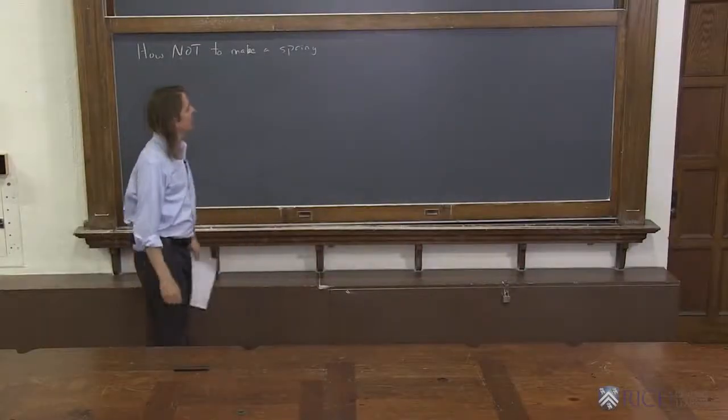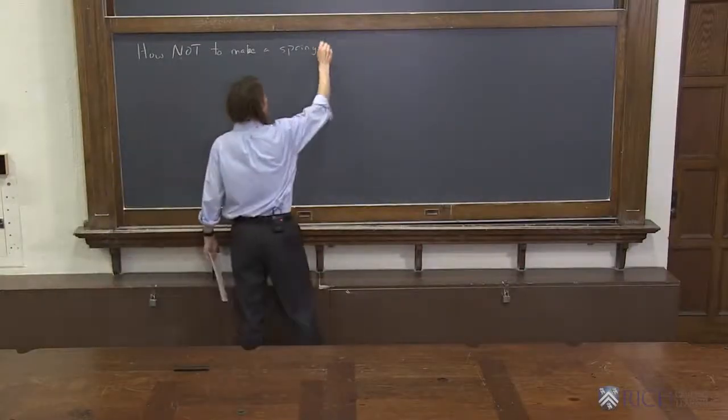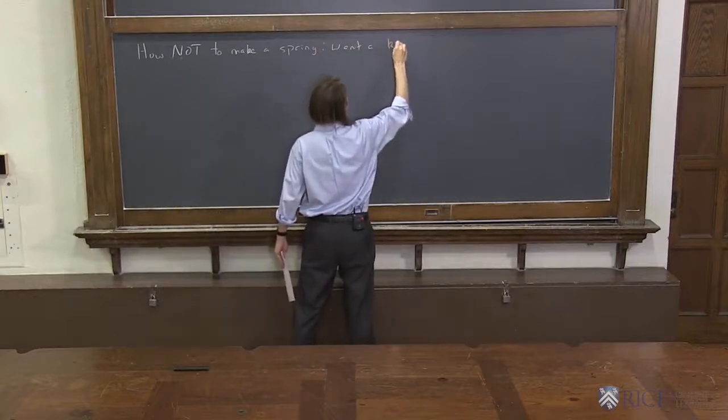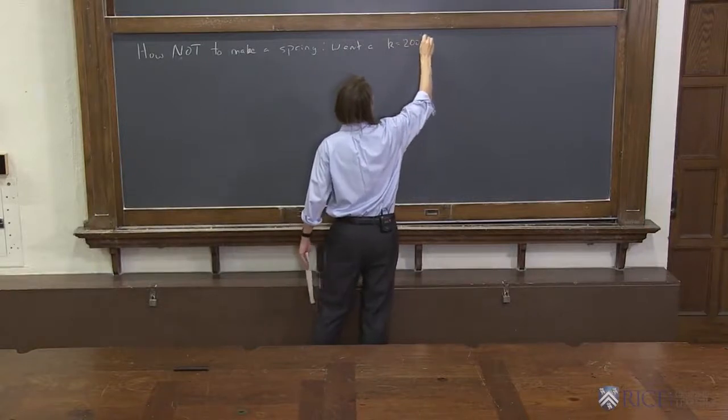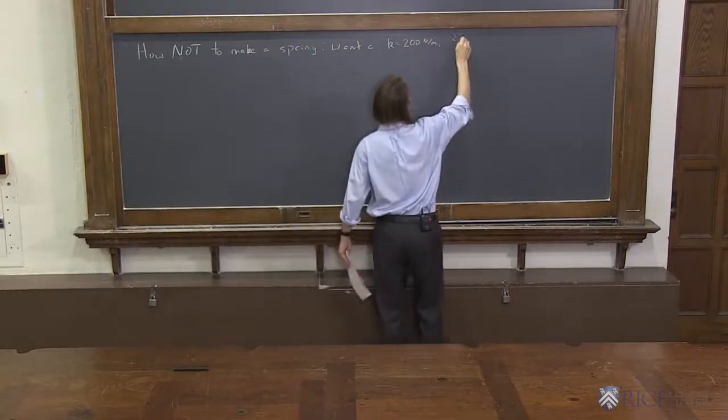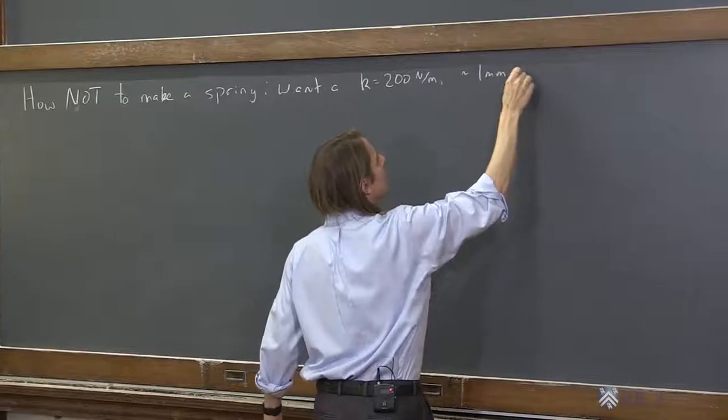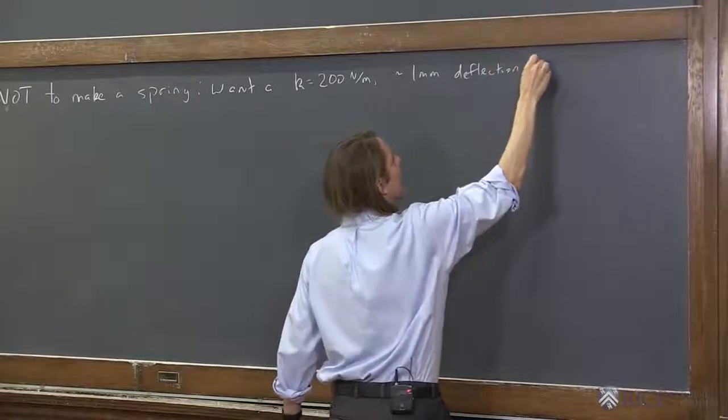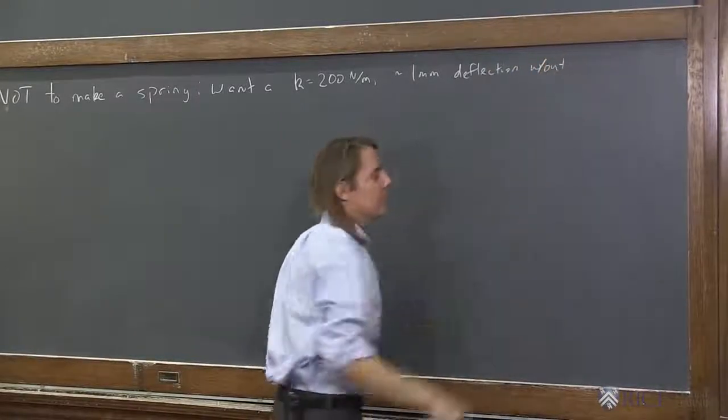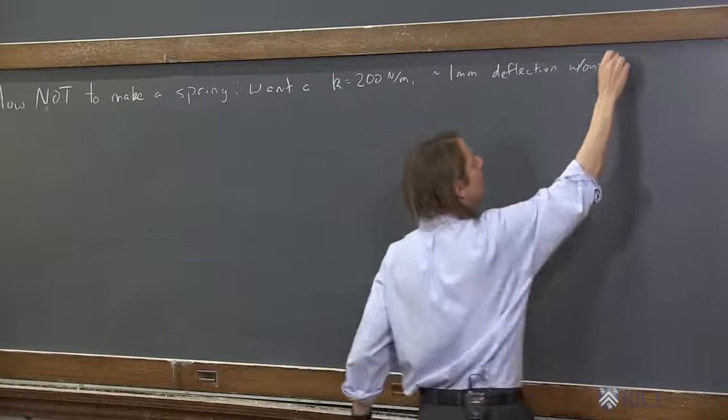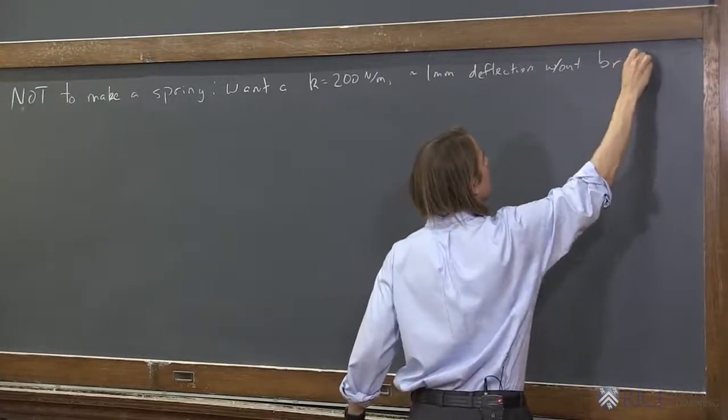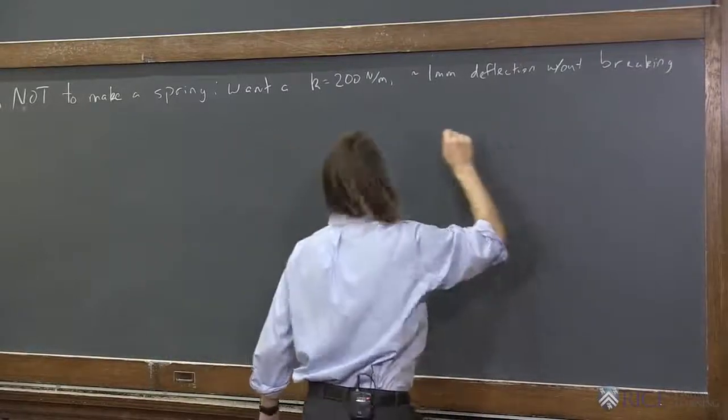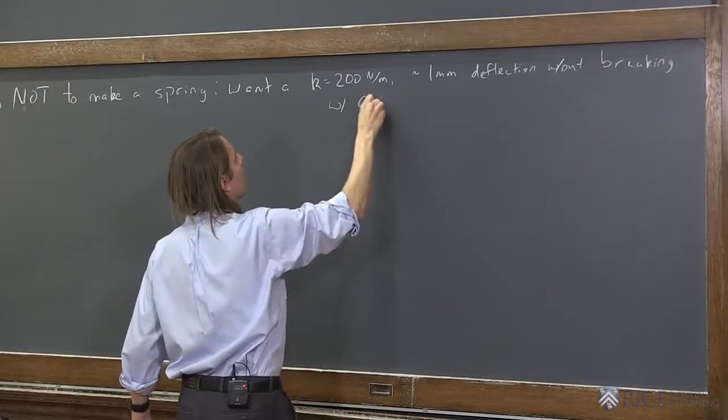Now we're going to look at how not to make a spring. Let's imagine we want a spring with a spring constant 200 newtons per meter, and about one millimeter deflection, and without breaking. And we want to use copper wire.